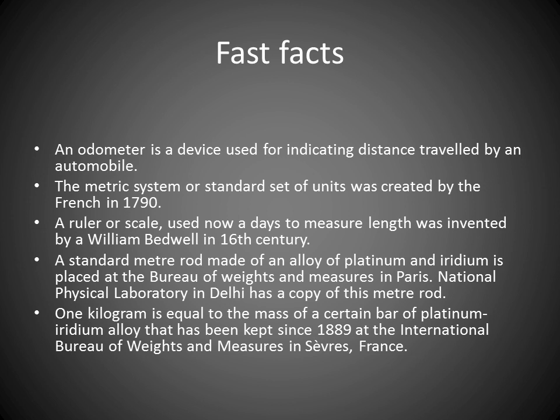Fun facts: An odometer is a device used for indicating distance traveled by an automobile. The metric system was created by the French in 1790. A ruler or scale used nowadays to measure length was invented in the 16th century. A standard meter rod made of an alloy of platinum and iridium is placed at the Bureau of Weights and Measures in Paris. The National Physical Laboratory in Delhi has a copy of this meter rod. One kilogram is equal to the mass of a certain bar of platinum-iridium alloy kept since 1889 at the International Bureau of Weights and Measures in Sèvres, France.